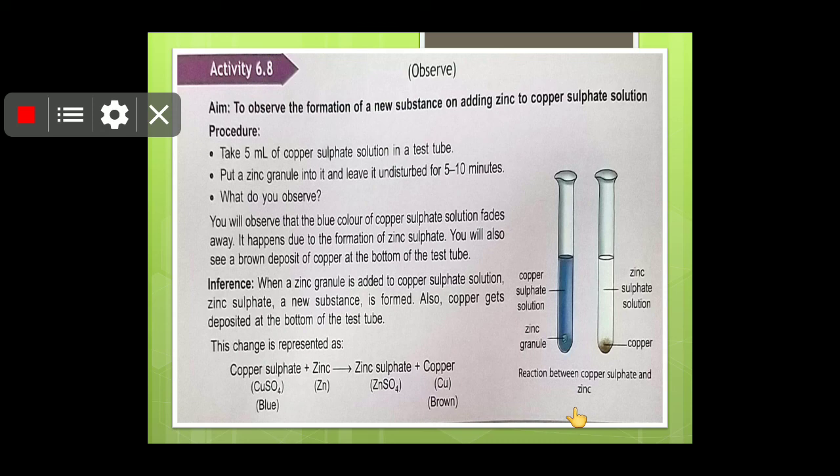So here one more example is there. To observe the formation of new substance, take 5 ml of copper sulfate solution and put zinc granules into it and leave it for 5 to 10 minutes. Then what you will observe, you will observe that the blue color copper sulfate solution fades away and becomes discolored, and it happened due to the formation of zinc sulfate. You will also see a brown deposit of copper. So similarly you can observe that reaction here. This is also a chemical change, a new product.